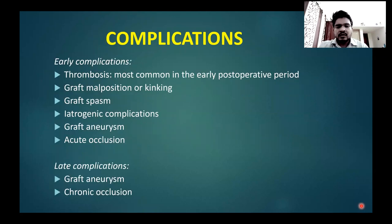Complications can be further divided into early and late complications. Early complications: thrombosis is the most common in the early post-operative period. There can be graft malposition or kinking, graft spasm, iatrogenic complications such as pericardial effusion or pneumothorax, graft aneurysm, and acute occlusion. Late complications can be graft aneurysm or chronic occlusion.